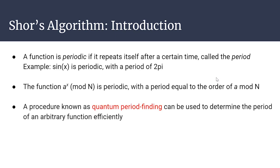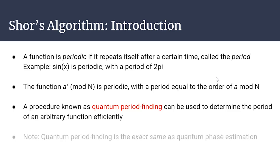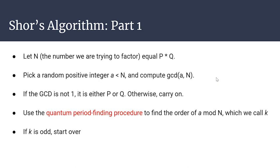Quantum period finding is a procedure that can determine the period of any arbitrary function efficiently, and it turns out to be the same problem as quantum phase estimation — it uses the same circuit. Everything in Shor's algorithm except the quantum period finding step happens on a classical computer. Only the quantum period finding actually runs on the quantum computer.